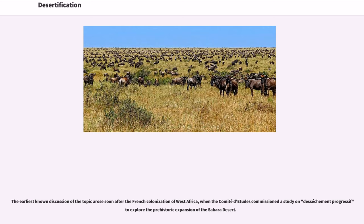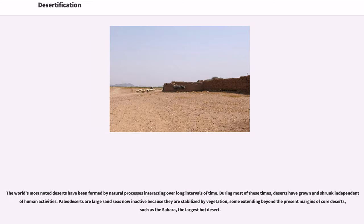The earliest known discussion of the topic arose soon after the French colonization of West Africa, when the Comité d'études commissioned a study on desséchement progressif to explore the prehistoric expansion of the Sahara Desert. The world's most noted deserts have been formed by natural processes interacting over long intervals of time. During most of these times, deserts have grown and shrunk independent of human activities. Paleo-deserts are large sand seas now inactive because they are stabilized by vegetation, some extending beyond the present margins of core deserts, such as the Sahara, the largest hot desert.